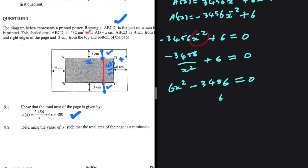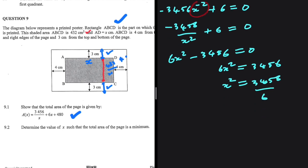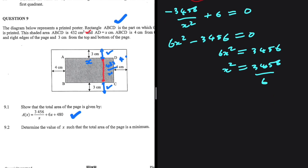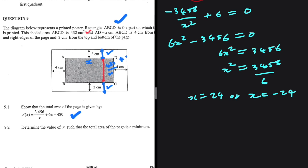So 6x squared is equals to 3456, so x squared will be equals to 3456 divided by 6. If we take square roots on both sides we're gonna have x being equals to 24 or x being equals to minus 24.